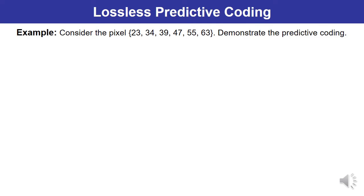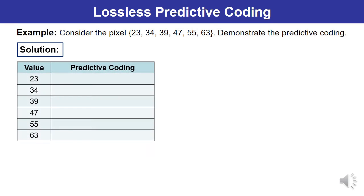Now let us discuss with the help of an example how lossless predictive coding is actually performed on a given set of pixels. A set of pixels is given: 23, 34, 39, 47, 55, and 63. While solving such problems, you first draw a table with pixel values and their corresponding predictive coding differences.